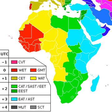Mozambique, Namibia, Rwanda, Sudan, Zambia, and Zimbabwe also use Central Africa Time. The following countries use South Africa Standard Time instead of Central Africa Time: Lesotho, South Africa, and Eswatini.